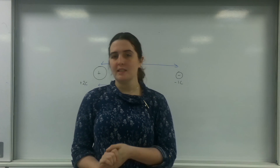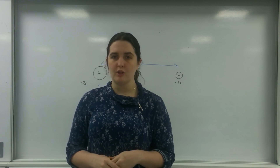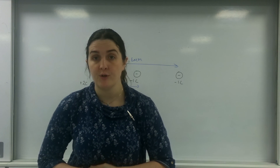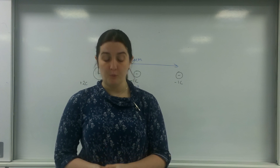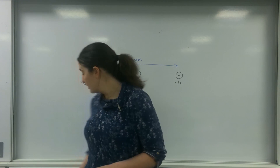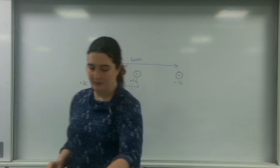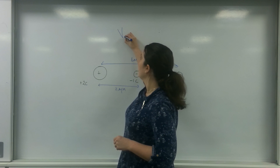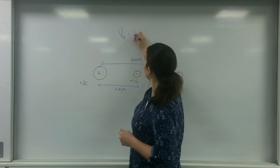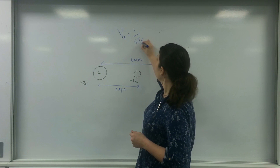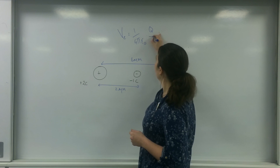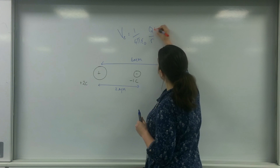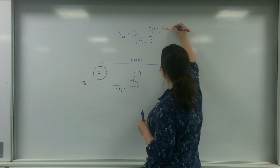Hello and welcome to TR Physics. Today I'm going to give an example of using the potential in radial fields formula. The formula for electric potential in radial fields is 1 over 4 pi epsilon 0, times Q over r. This Q here is the thing causing the field.